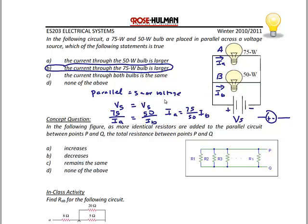For the second concept question: if I have identical resistors in a parallel circuit between points P and Q, the total resistance between P and Q as I continue to add resistors would decrease. Since the parallel equivalent resistance is always smaller than the smallest resistor in the network, the more resistors I add, the smaller the equivalent resistance becomes.